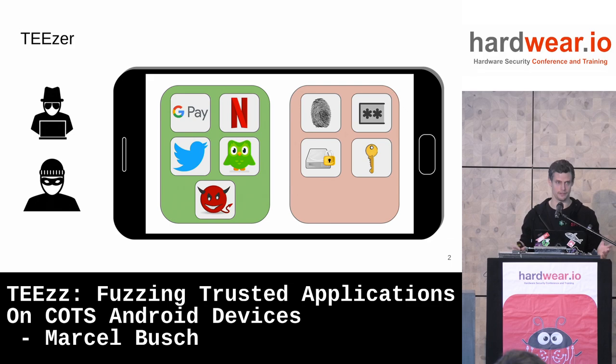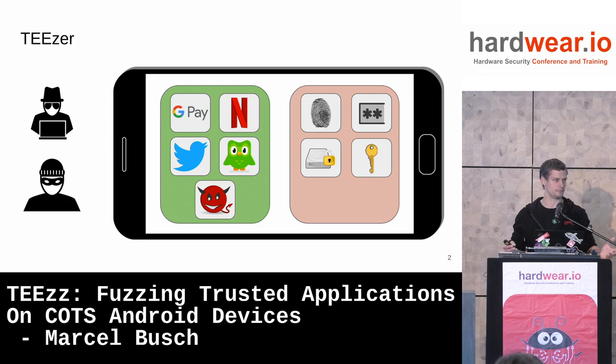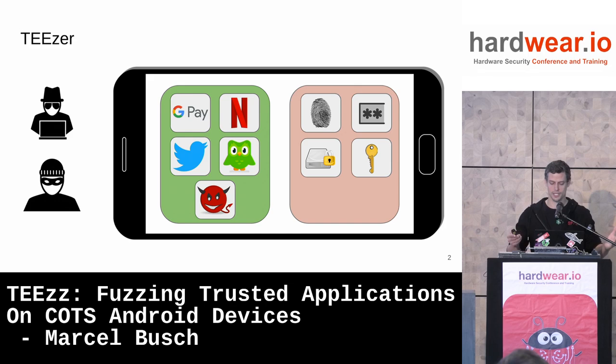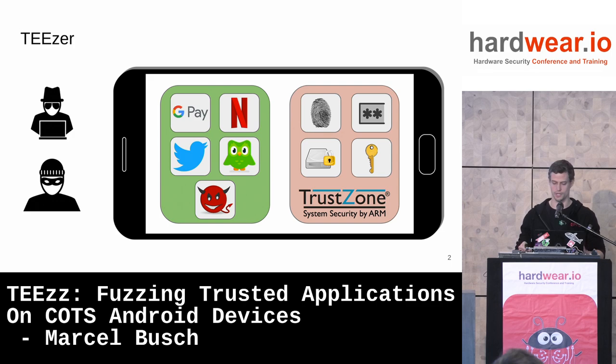As a second line of defense, manufacturers came up with the idea of a trusted execution environment — an isolated context that gives you integrity and confidentiality guarantees to keep your biometric identifiers safe, your PIN, pattern and passwords, your crypto keys for full disk encryption, and cryptographic key management in general. Since ARM is the dominating chip architecture, ARM TrustZone is typically the technological foundation for these trusted execution environments.